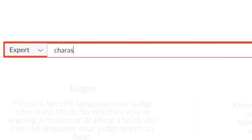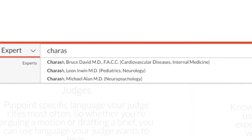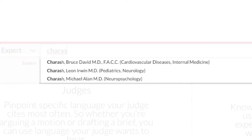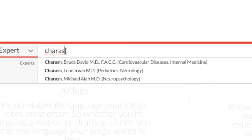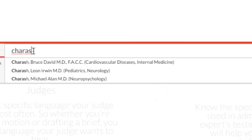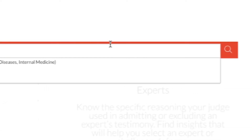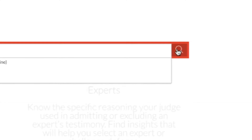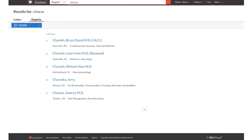The word wheel drop-down provides experts whose names match what was entered, and for each expert's name there is information on their area of expertise to allow you to quickly narrow your selection to the specific expert you are interested in. If you do not see the expert you are looking for in the word wheel, click on the magnifying glass to run a search and see all possible results.